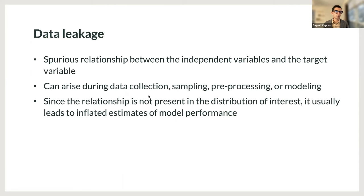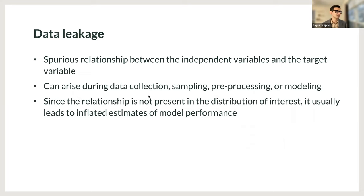So what is data leakage? Data leakage is a spurious relationship between the independent variables or features and the target variables or outcomes in a machine learning model. It can arise during any stage of the modeling process — data collection, sampling, pre-processing, or evaluation. Perhaps most importantly, since this relationship is not present in the distribution of interest, it usually leads to inflated estimates of performance. Developers will always overestimate how well they can do when their models suffer from data leakage.